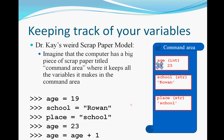Next step: age gets age plus one. Remember with all these assignment statements, it's always evaluate the right-hand side and then do the left. So first, just look at the right-hand side — that says age plus one. What's age? It's 23. What's 23 plus one? That's 24. Where do I put it? Into the age box. So now age is 24. After these five lines of code, this is what we've got.